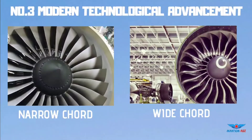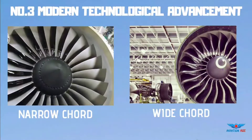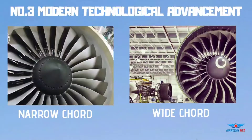Number 3: Modern Technological Advancement. Earlier the fan blade was narrow-chord, but modern turbofan wide-chord blades have more twist for providing more efficiency and to prevent erosion, bird strike, and other foreign object damage. Swept or twisted blades transmit shockwaves away from the tip towards the core, thus minimizing vibration and noise, which is an added advantage to the modern gas turbine engine.